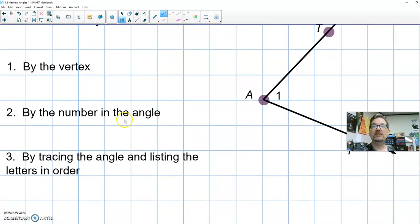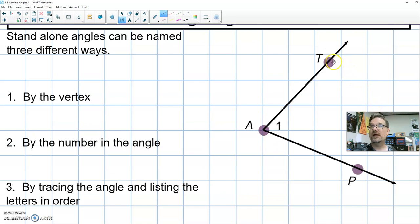We could also name it by tracing the angle and listing the letters in order. So to do it the third way, we could call this, if we trace the angle, T, A, P. Notice the vertex is always the middle angle. So we said we can name an angle by its vertex, so we called it angle A because A is the point of its vertex. This symbol means angle. There's a number inside the angle, so I could call it angle 1. Or I could trace the angle T, A, P.